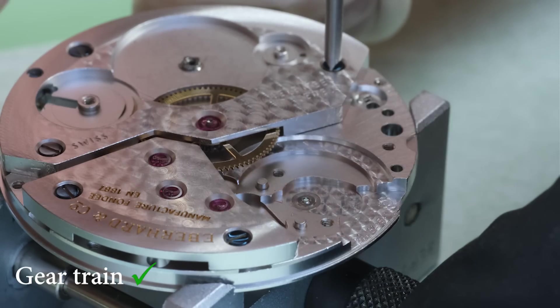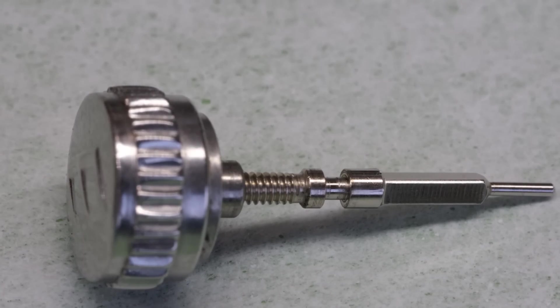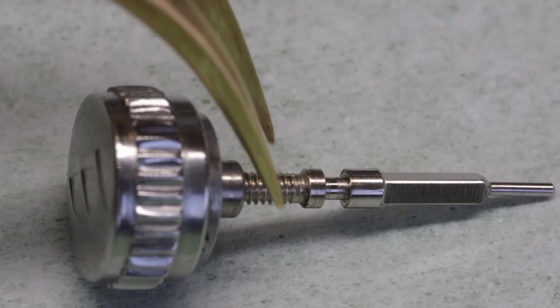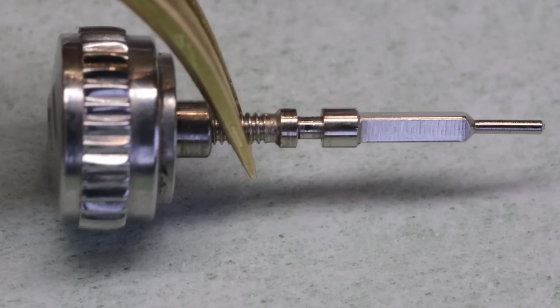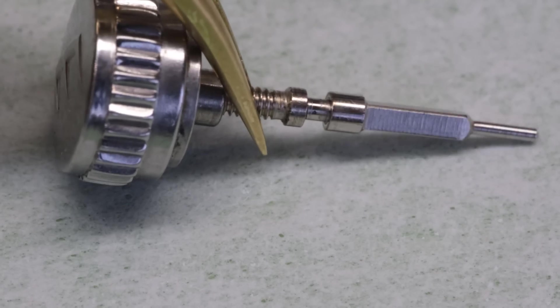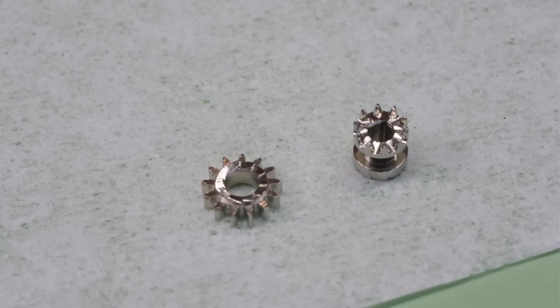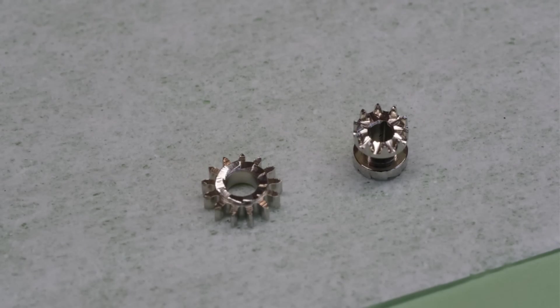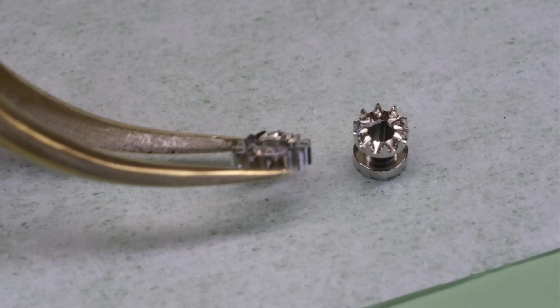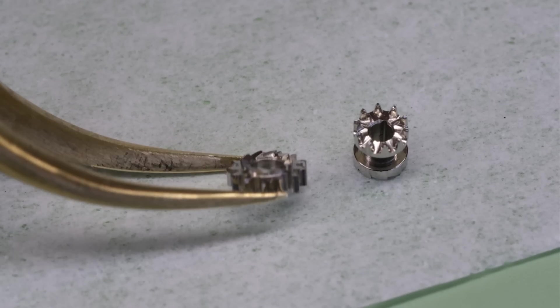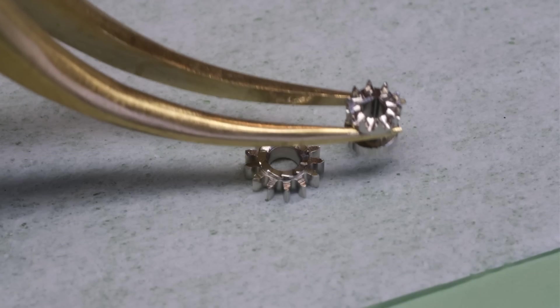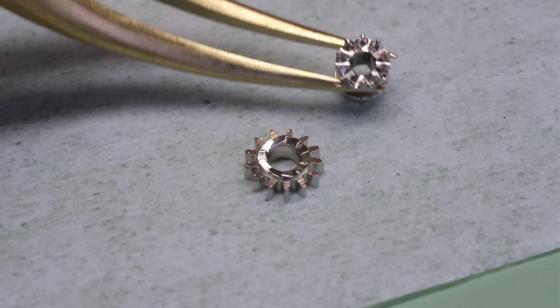All right. When the train is in place, let's see how we can use the crown to wind the watch and set the time as well. Most important is this squared off section of the stem. We're going to put two small pinions on the stem. On the left, we have the winding pinion. And on the right, we have the sliding pinion. And the sliding pinion has a square hole, which then, of course, fits with the square portion of the stem.